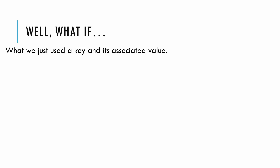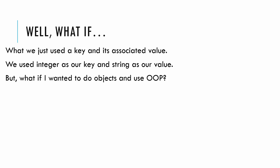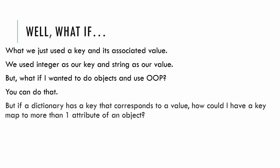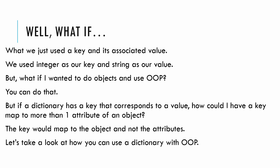We just used integer as the key data type and string as the value data type. But what if we wanted to use object-oriented programming with a dictionary? A dictionary maps a key to a single value, but we can map a key to an object — so the key maps to the object, not individual attributes. Let's look at how to use a dictionary with OOP.